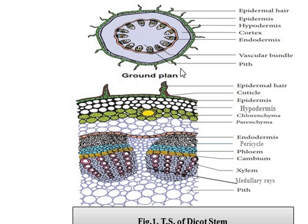Both the cuticle and epidermal hairs are means to give protection to the plant. Then, after the epidermis, in some stems we have a hypodermis. In addition to the cortex, we have a hypodermis. The hypodermis cells are made of collenchymatous cells, which have deposition at the corners, and they are meant to protect the plant from wind stress. We can say that it gives mechanical support to the plant.